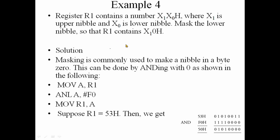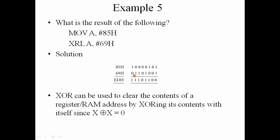Okay, now register R1 contains X1 and X0 numbers where X1 is upper nibble and X0 is lower nibble. Make the lower nibble so that R1 contains X10, meaning the lower nibble is set to 0 and X0 equals 53. We use F0H to mask the lower nibble so that R1 contains X0 in the upper nibble and zero in the lower nibble.